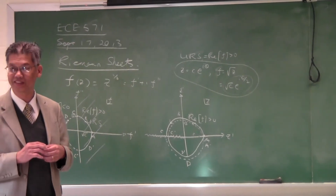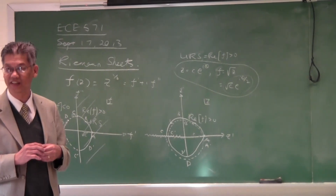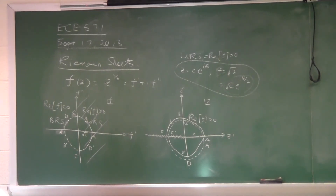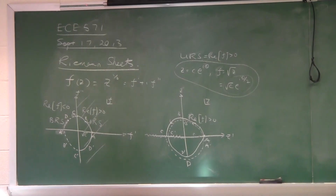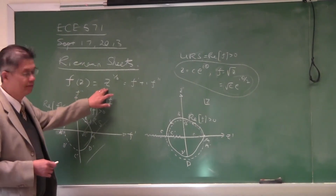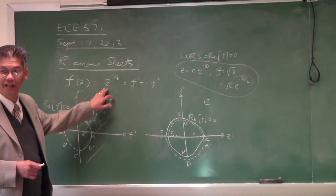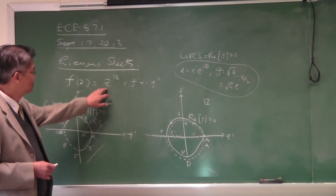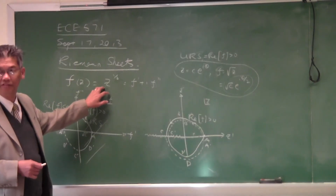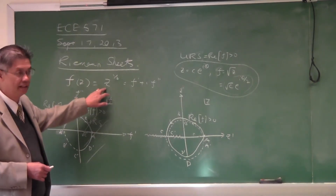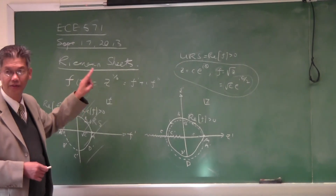Any questions on Riemann sheets? How do you choose the number of Riemann sheets? It depends on the number of values a function has. This is called a multi-value function. It turns out that this is a double-value function — it has only two values for every value of z, so you need two Riemann sheets.